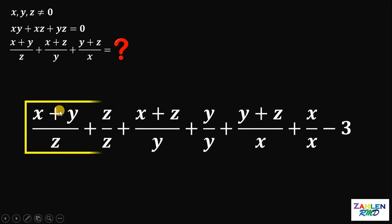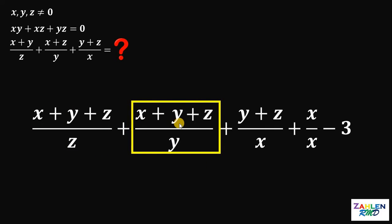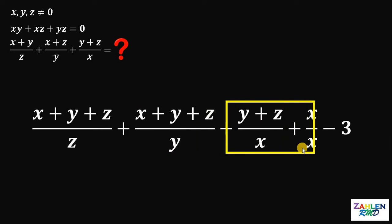Now, let's focus on these two terms. If we combine them, we get x plus y plus z all over z. On these two terms, if we add these two terms, we get x plus y plus z all over y. Now on the next two terms, if we add them, we get x plus y plus z all over x.